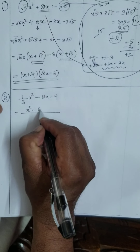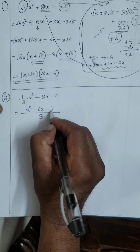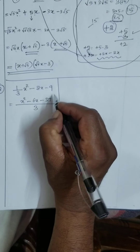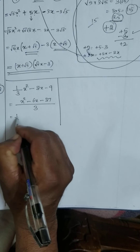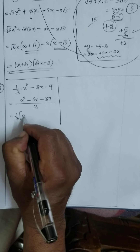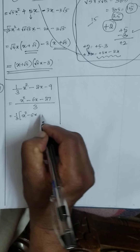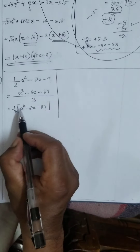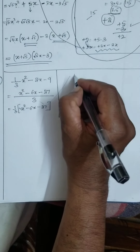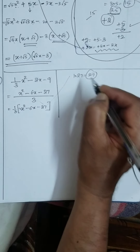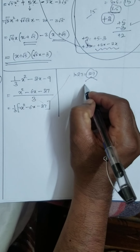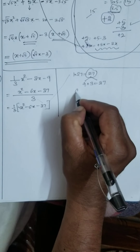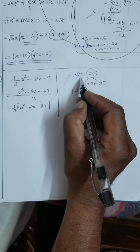3 is the LCM: x² minus 6x minus 27. Okay. Now I will take 1/3 separately: x² minus 6x minus 27. Now, 1 into 27. What are the factors of 27? 9 — 3 threes are 27. That means 9 and 3 are the two factors of 27.